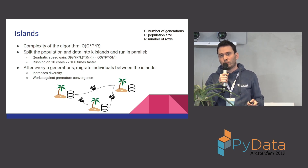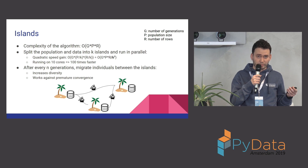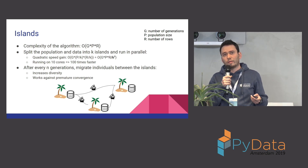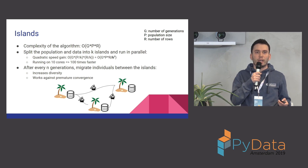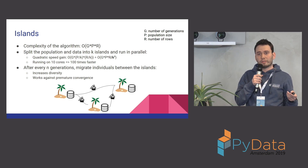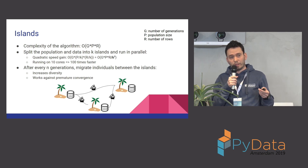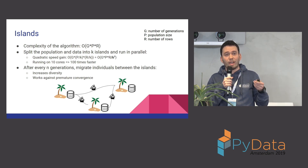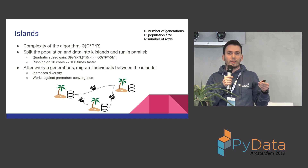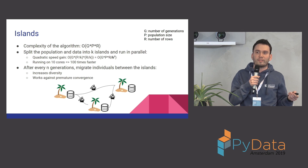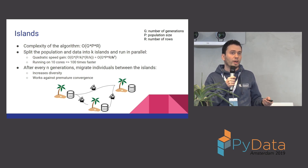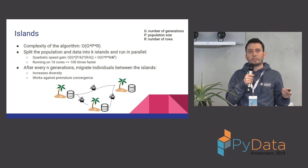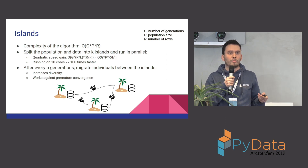In a genetic algorithm, the complexity is usually number of generations times population size, because the main operation is fitness calculation. Since the main operation is fitness calculation and in our case we train a model for every fitness calculation, it is also linear to the number of rows, because most classifiers are almost linear to number of rows. So complexity becomes: number of generations × population size × number of rows.